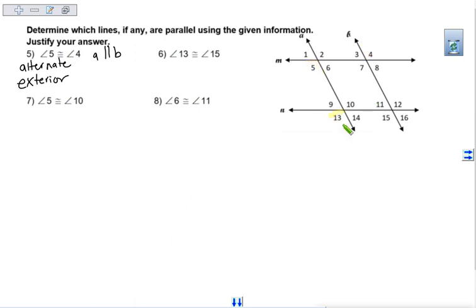Then we're looking at angle 13 and 15. Cover up line M if it's throwing you off. We have one exterior angle and one interior angle on the same side of the transversal, so these are corresponding angles. Line N is our transversal, which makes line A and line B the ones that are parallel.